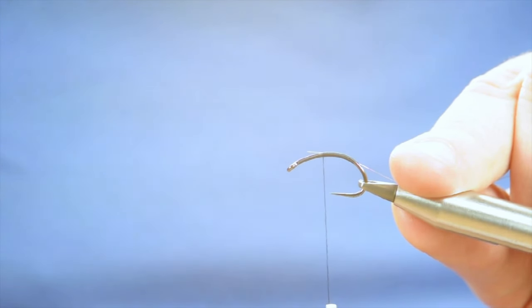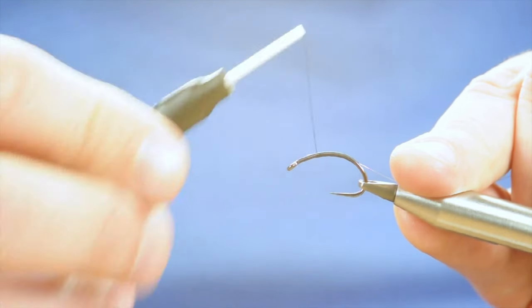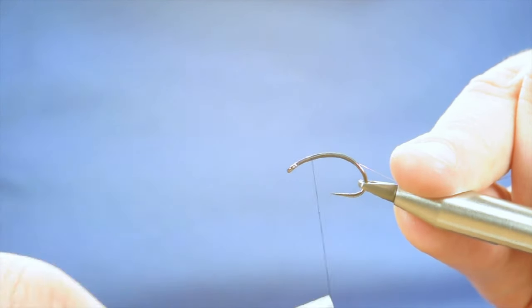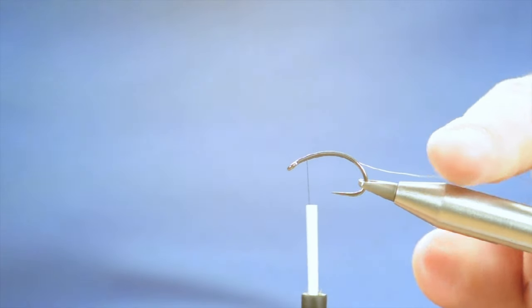I like the UTC for buzzers. It has a little shine to it that other threads just don't seem to have, and it flattens out really well for this type of fly. So we've calmed the thorax there.